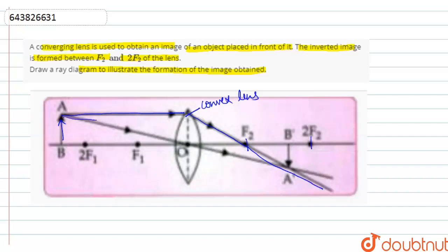And the second ray when passed through the optical center of the lens, the ray cuts the first ray which passes through the focus, that is between f2 and 2f2. So the image of the object AB is formed inverted, namely as A dash, B dash.